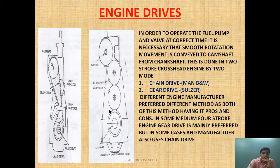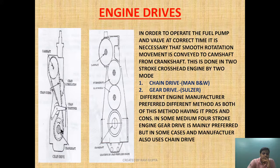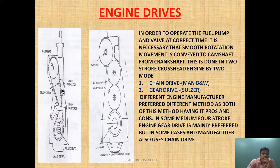As you can see here, this is the crankshaft and this is the camshaft. An intermediate gear wheel provides rotation to the camshaft. In chain drive, the crankshaft and camshaft movement is conveyed through a chain which is wrapped around the camshaft and crankshaft. Through a sprocket, it engages and rotates the camshaft.